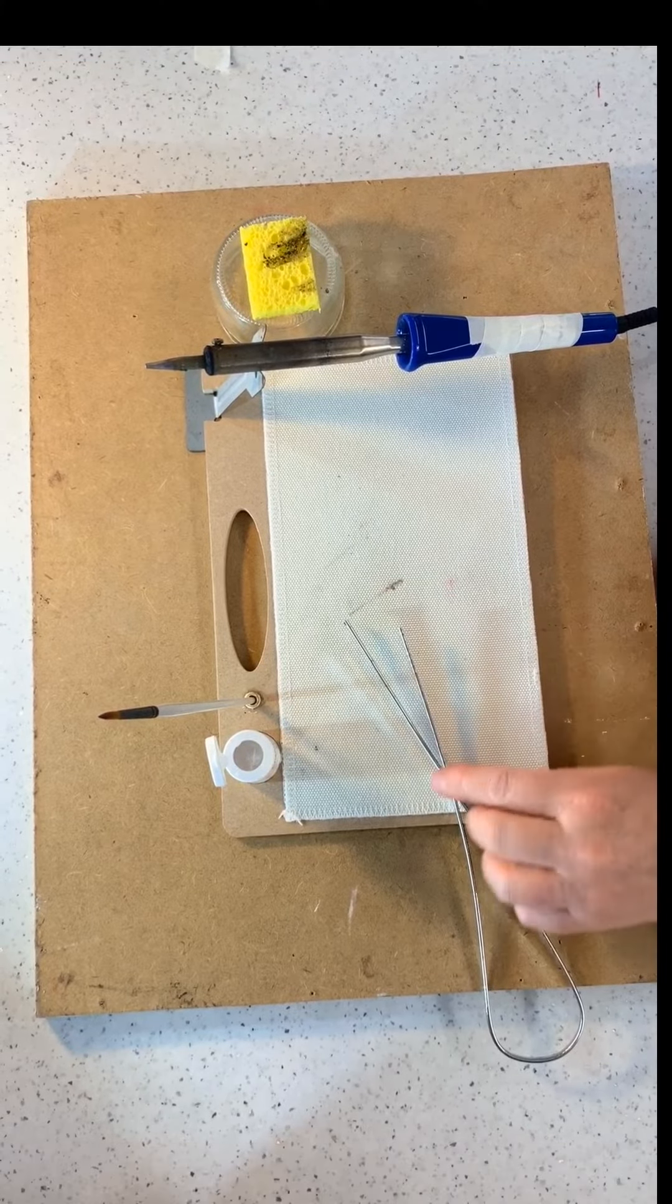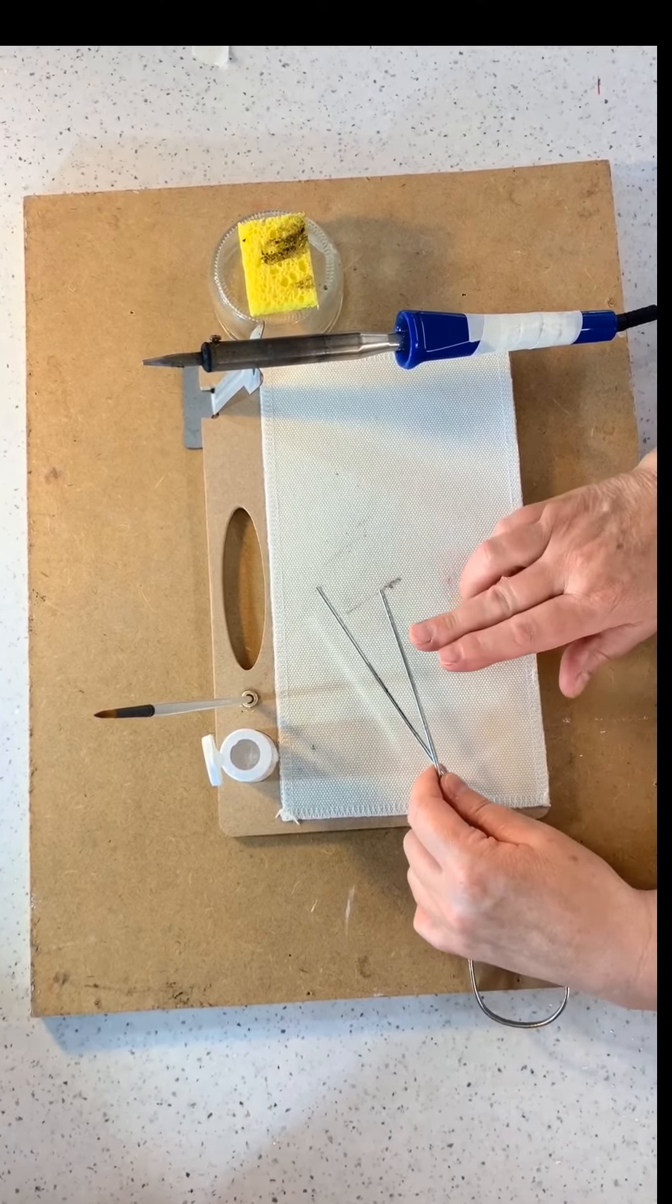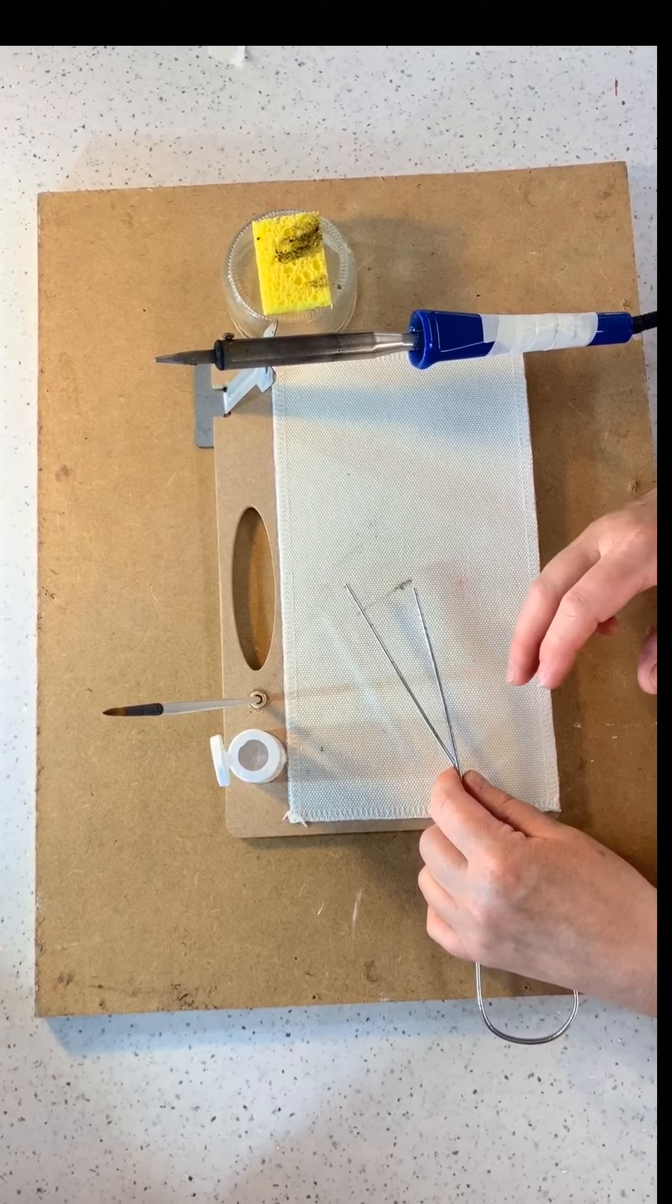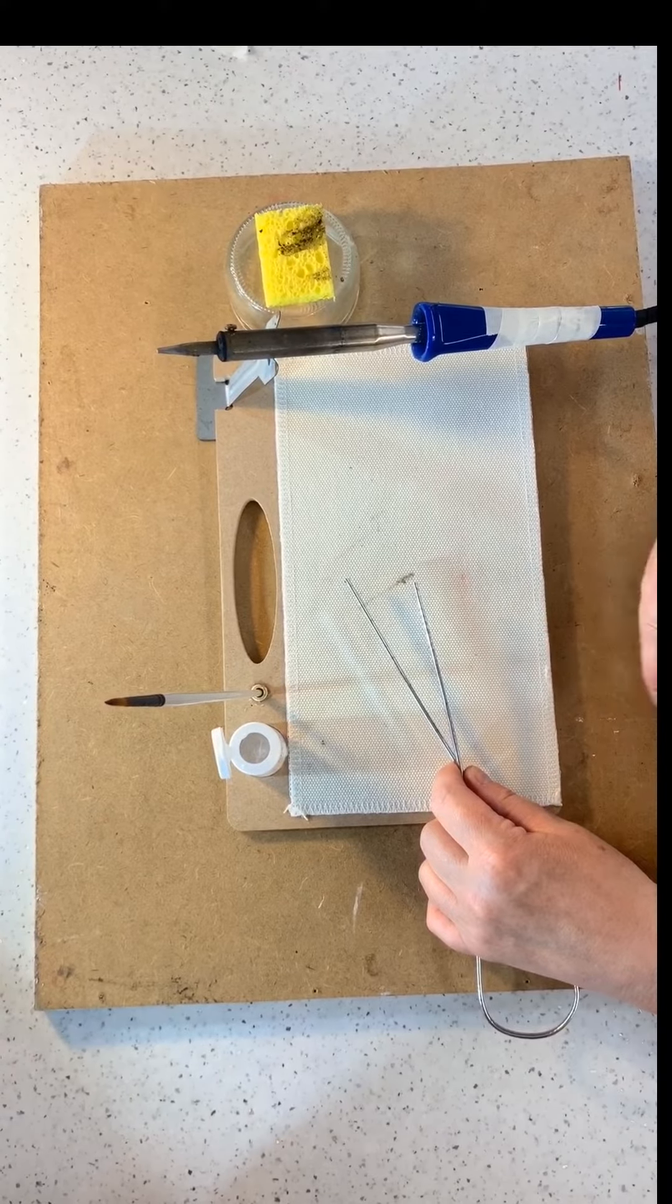So this is our solder. Our solder is made of 60% tin, 40% lead. This solder is especially designed for copper foiling, but we must be very careful with this.